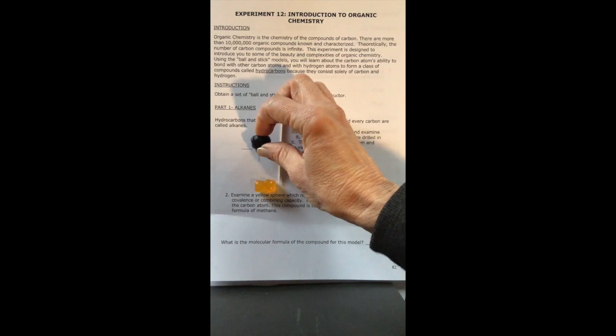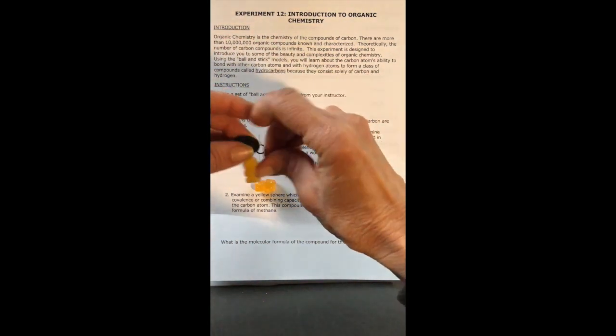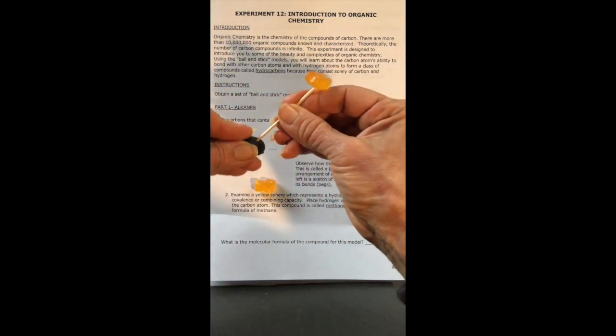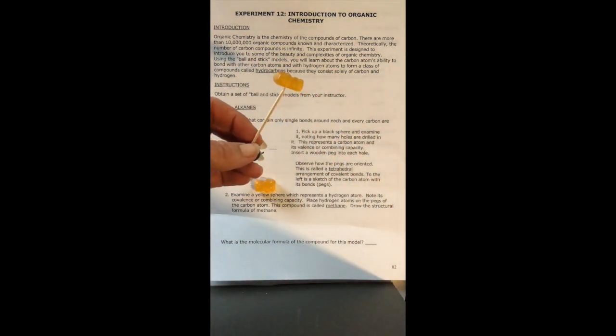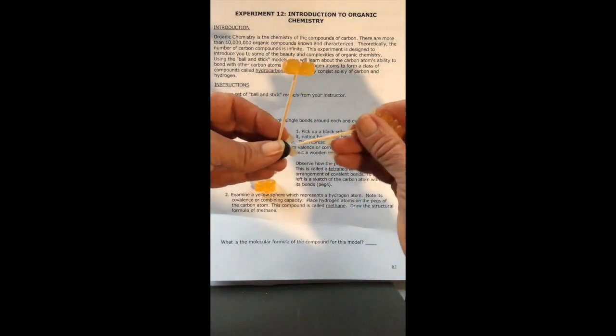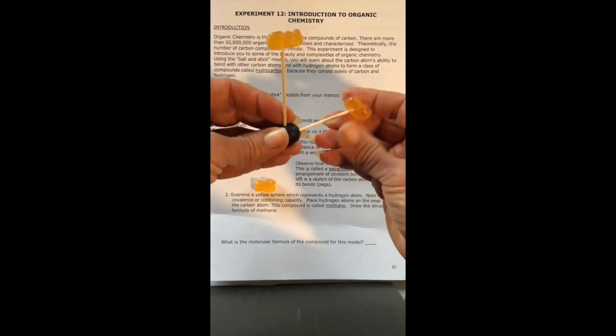Now carbon can form four bonds, so I'm going to attempt to make my compound now. What I'm going to do is I'm going to bond carbon to another atom. This represents our covalent bond. Covalent bond is the sharing of two electrons between two different atoms.